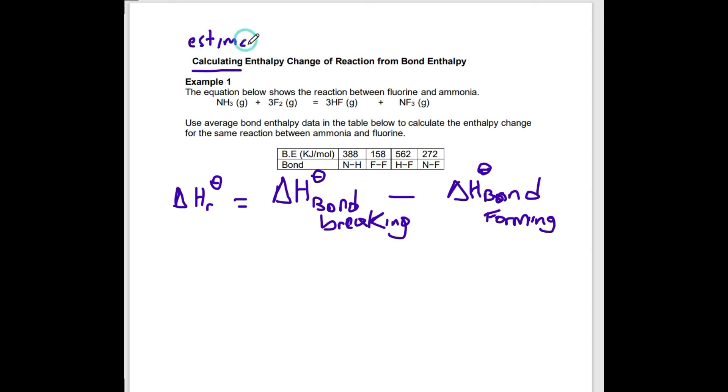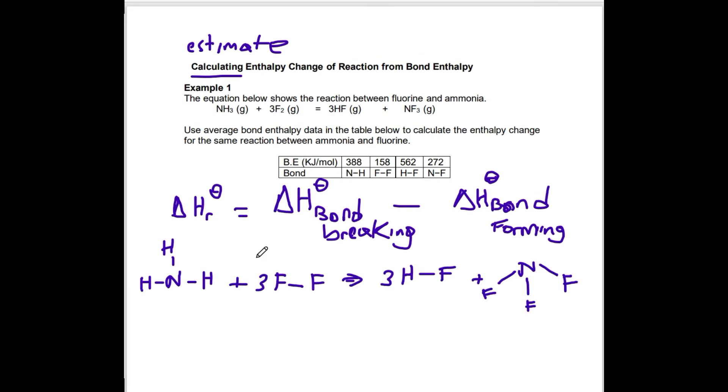When we calculate enthalpy change of reaction from bond enthalpy, it's really a decent estimate that we're making, but not an exact value. To get a more accurate value, we would have to do it by experiment. When we use bond enthalpies we're only estimating because they are average values, not specific to the reaction. Let's use this to calculate—or estimate—the enthalpy change for this reaction. We need to work out what bonds are broken and what bonds are formed. You must write the equation showing the structural formula of each substance involved.